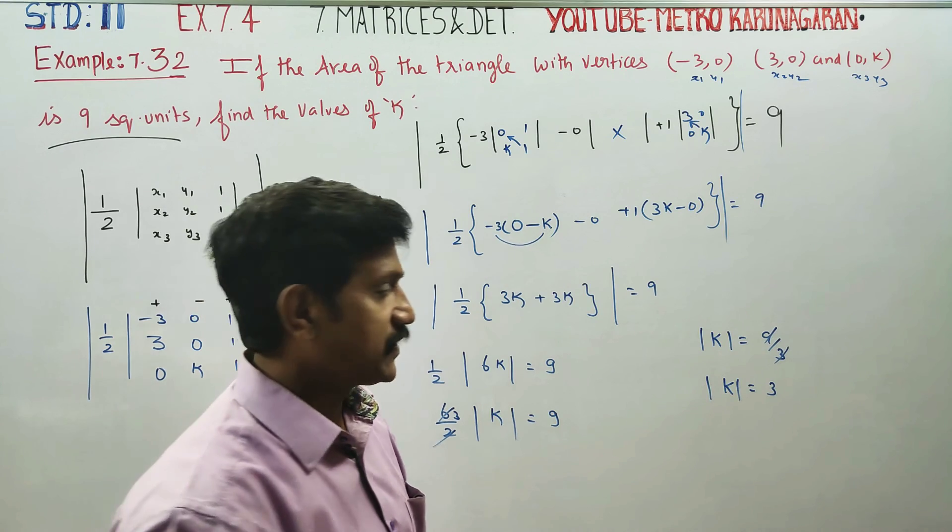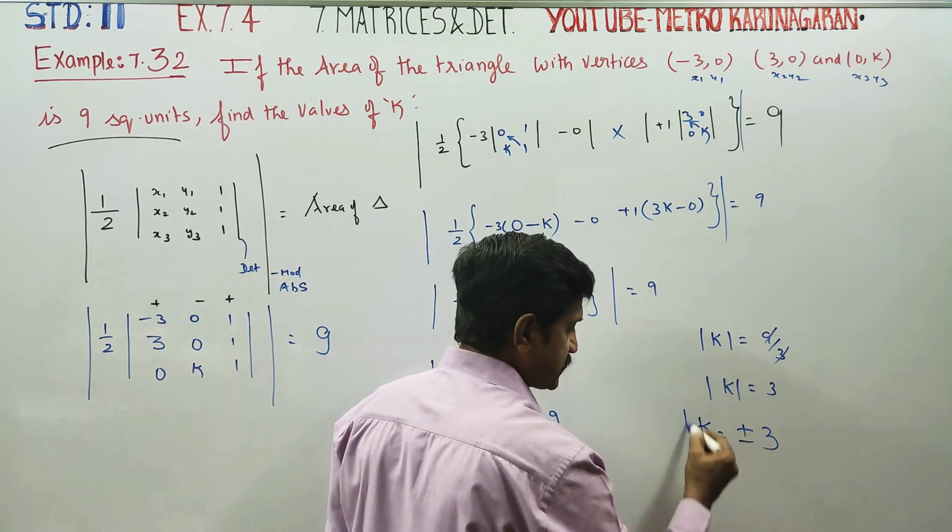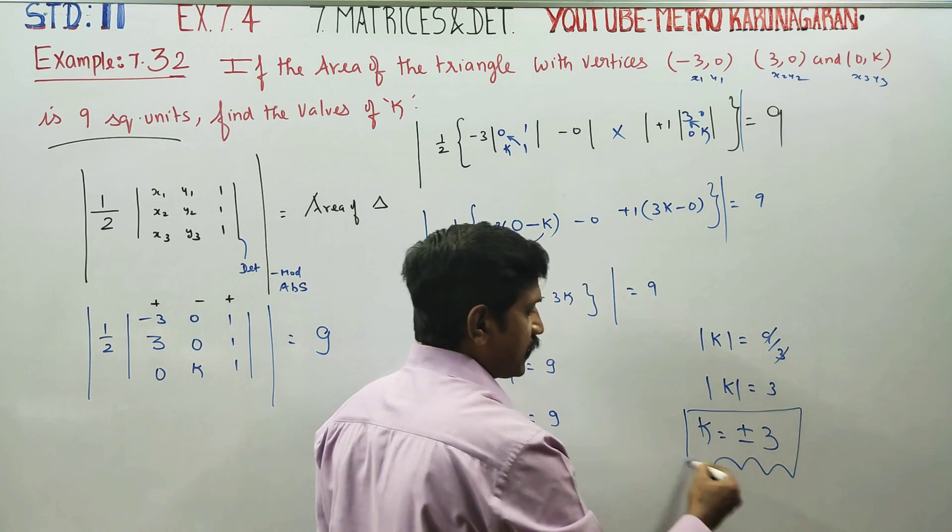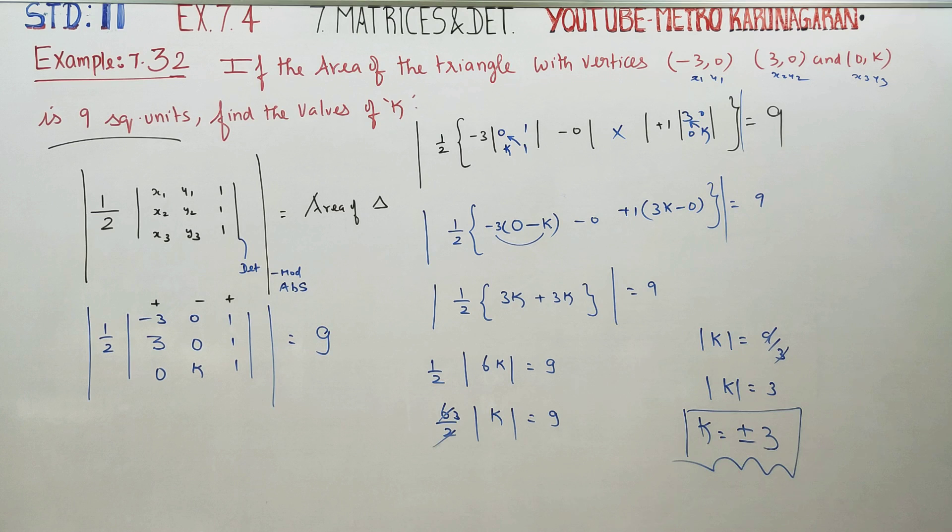K may be plus or minus 3. Your answer may be plus or minus 3. k is equal to 2 answers. One is plus 3 and another is minus 3. Okay, thank you.